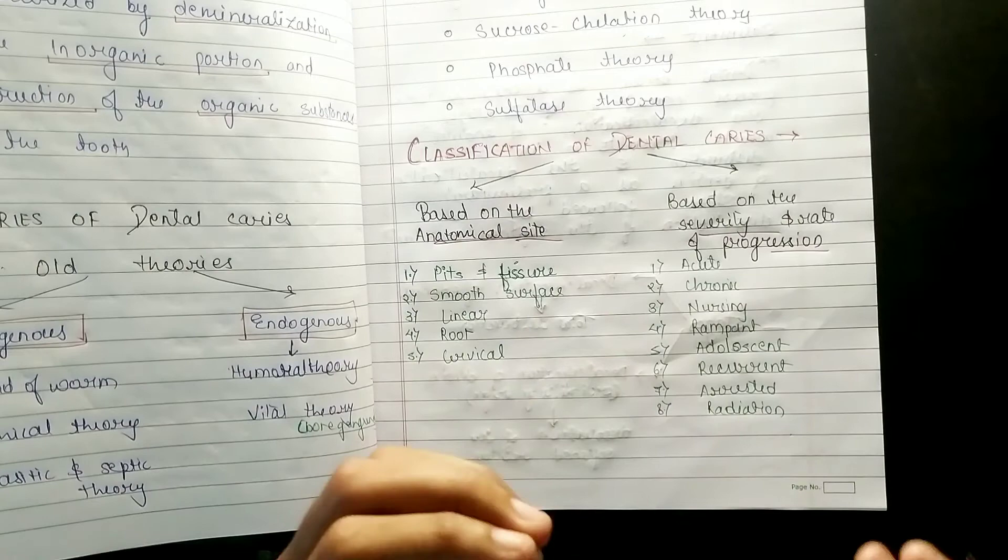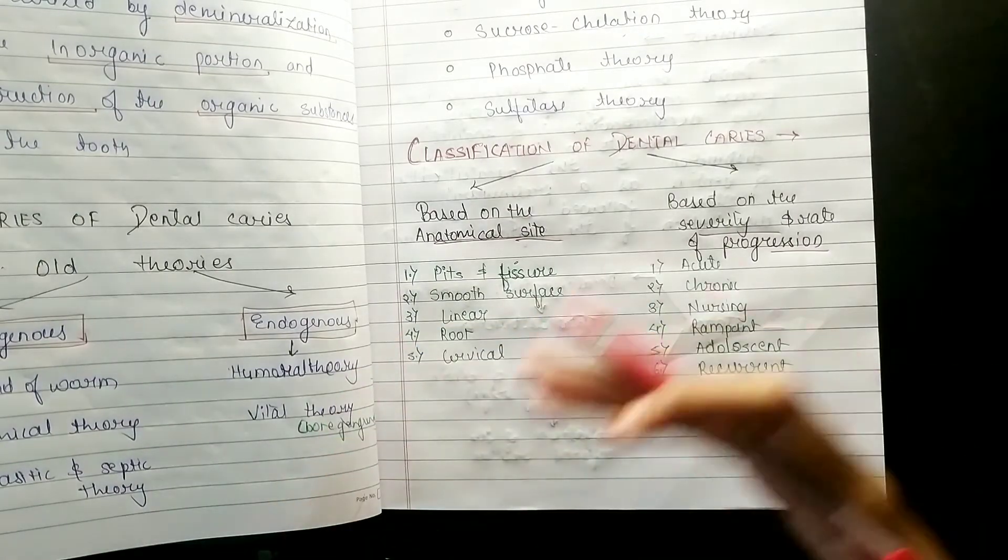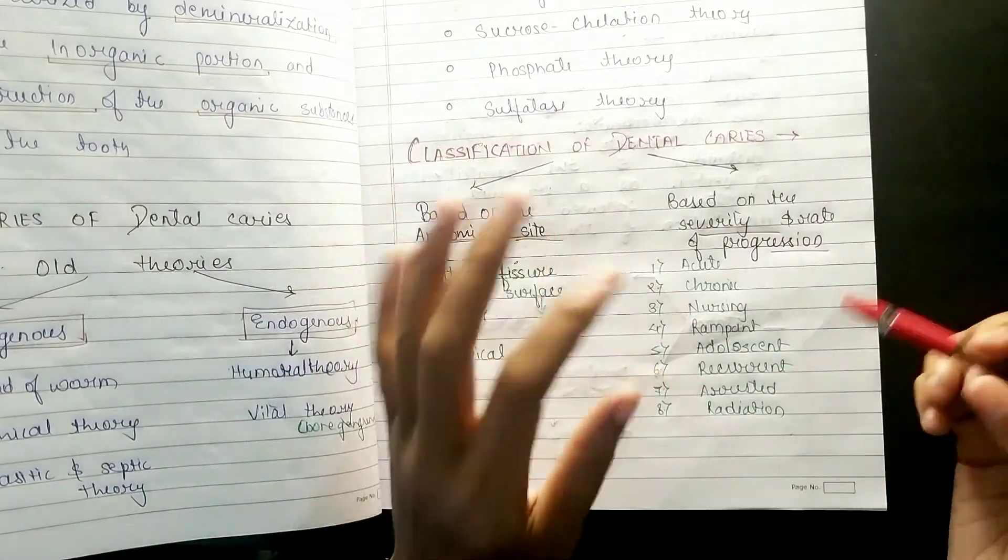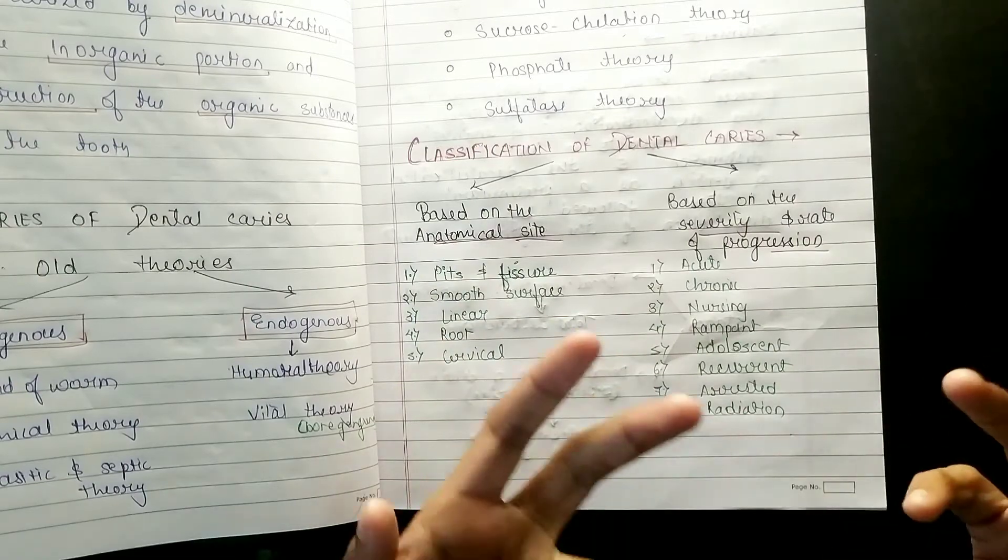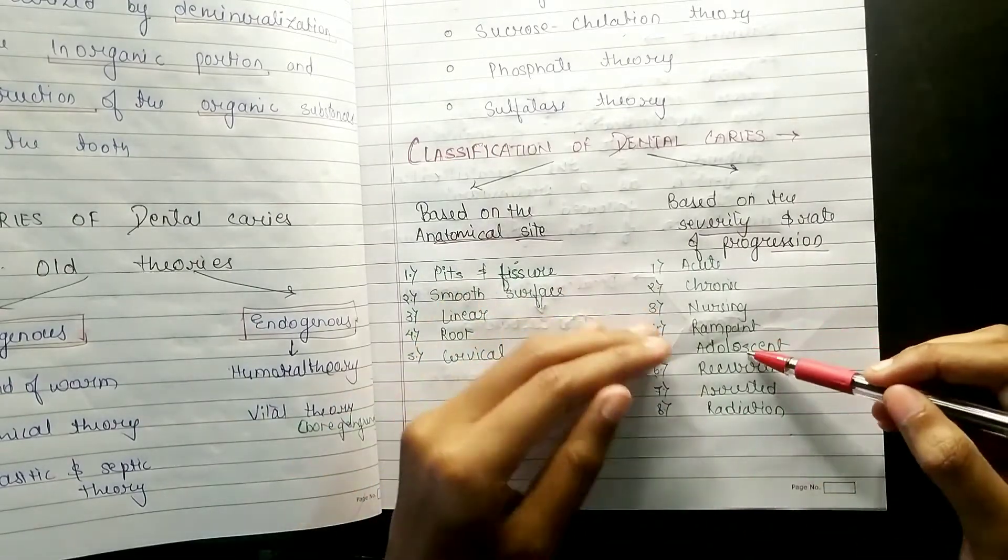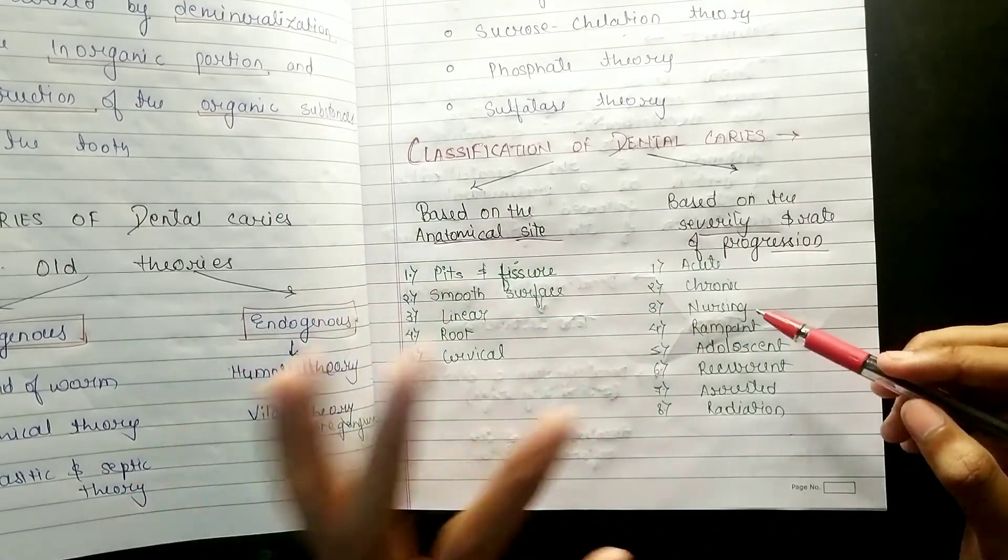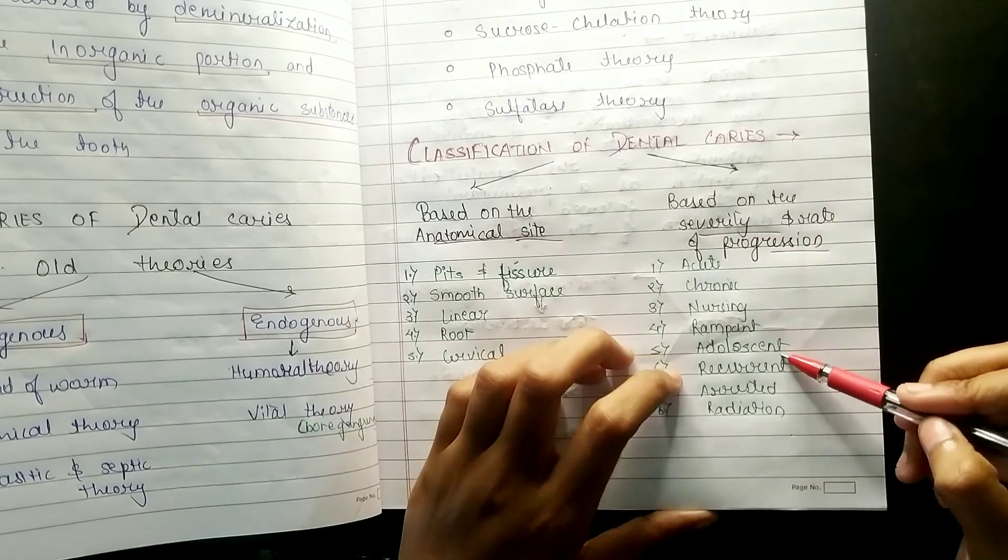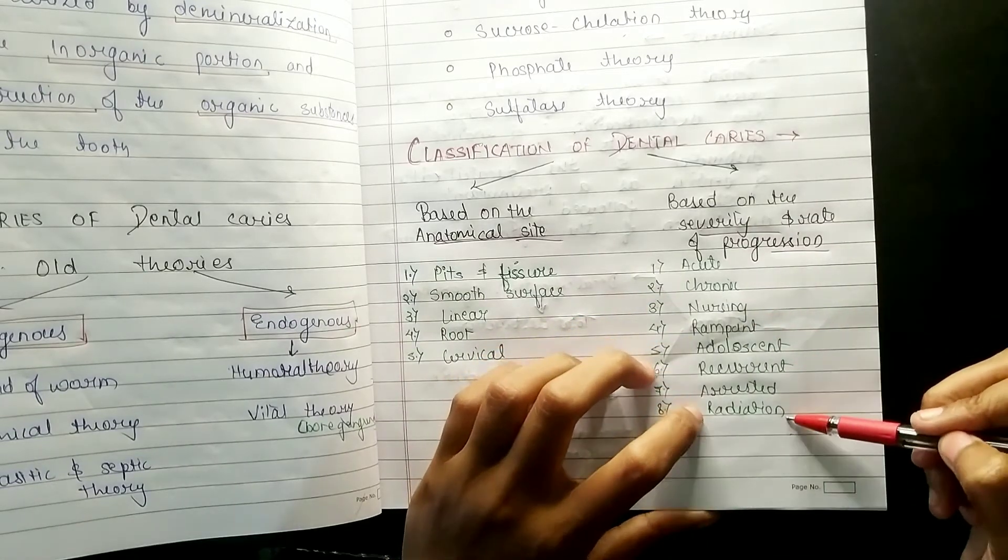Anatomical site: five types - pits and fissures, smooth surface, linear, root, and cervical. And based on severity: eight types. Based on severity, first what is acute and chronic, so two. First, I have made a mnemonic: nursing.